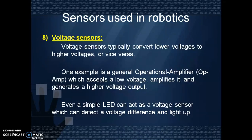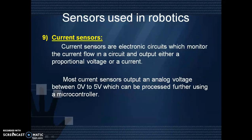Voltage sensors typically convert lower voltages to higher voltages or vice versa. A simple LED can act as a voltage sensor which can detect a voltage difference and light up. The last one is current sensors. Current sensors are electronic circuits which monitor the current flow in a circuit and output either a proportional voltage or current. So these are the various sensors used in robotics.